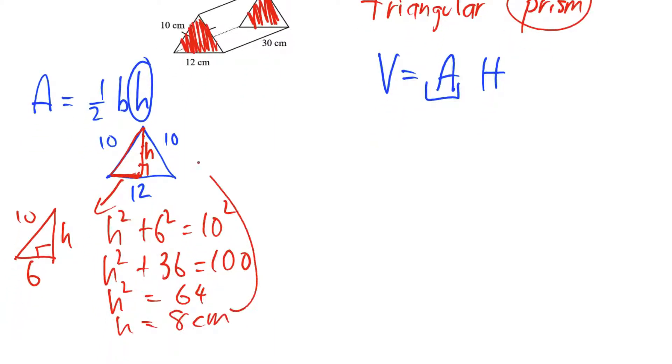So my height of the triangle goes in there. The base of my triangle is 12. It goes in there. And so my area of the base, one-half 12 times 8, comes out to 48 centimeters squared.